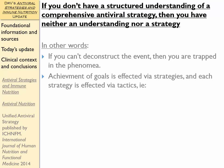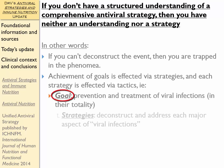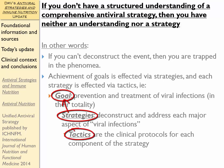Achievement of goals is affected by strategies, and each strategy is affected by its tactics. What that looks like visually is: we have goals, in this case the prevention and treatment of viral infections. Supporting that goal is the strategy of addressing each one of the major components of a viral infection, and to support that strategy we're going to use specific clinical protocols for each component.